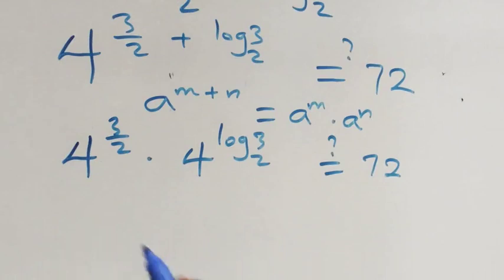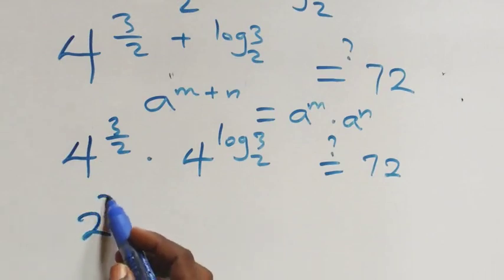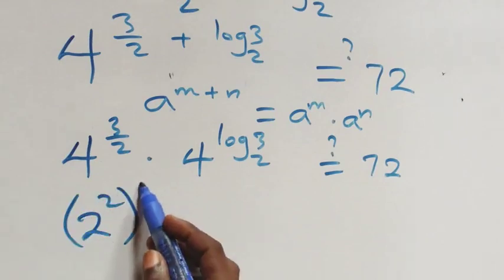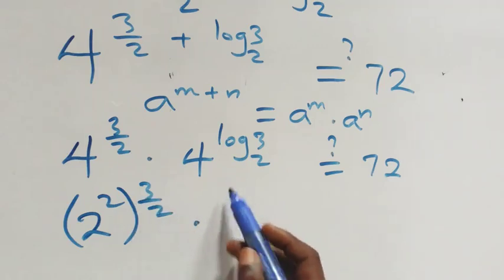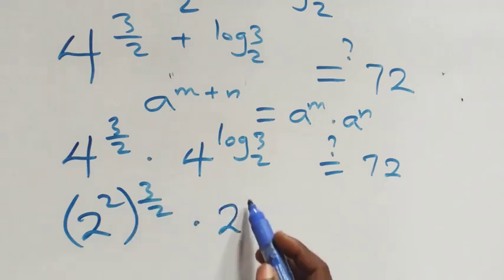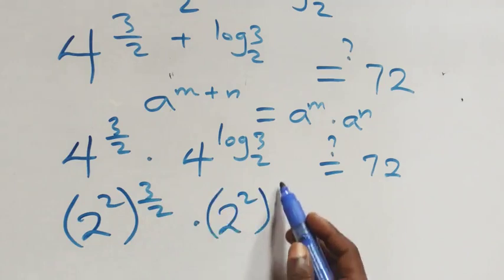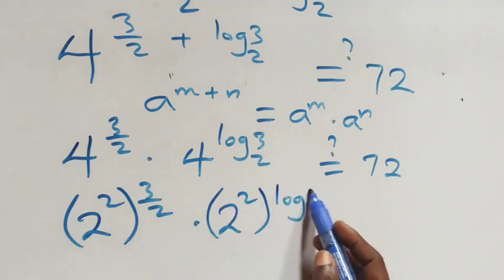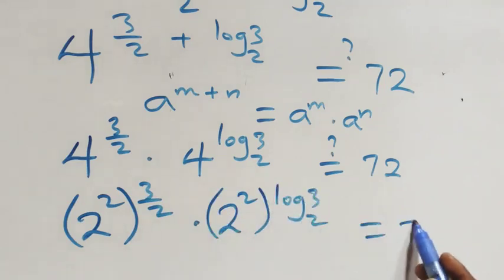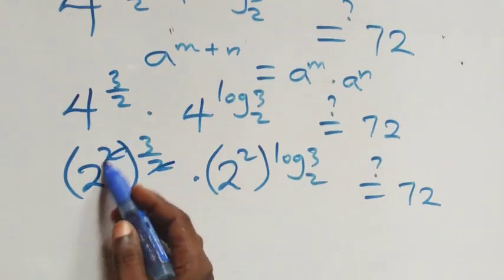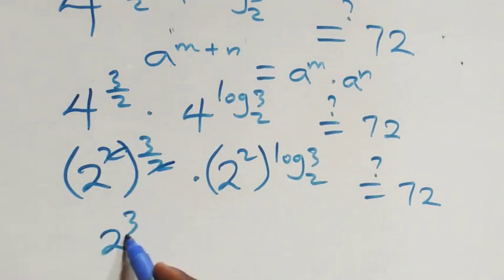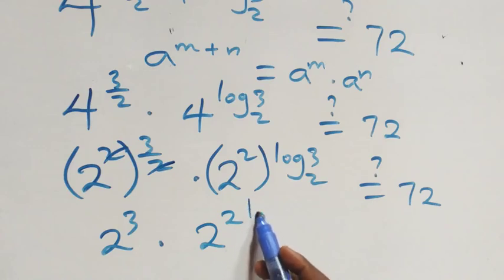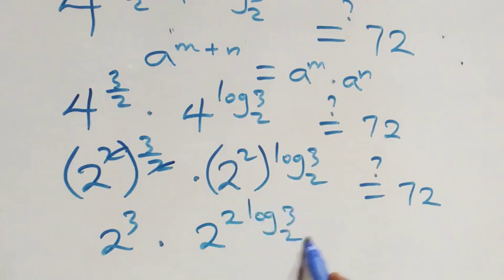Next step, we write four as two raised to power two, raised to power three over two; then two raised to power two, raised to power log three base two — is it equal to seventy-two? The powers multiply: we have two raised to power three, times two raised to power two times log three base two — is it equal to seventy-two?